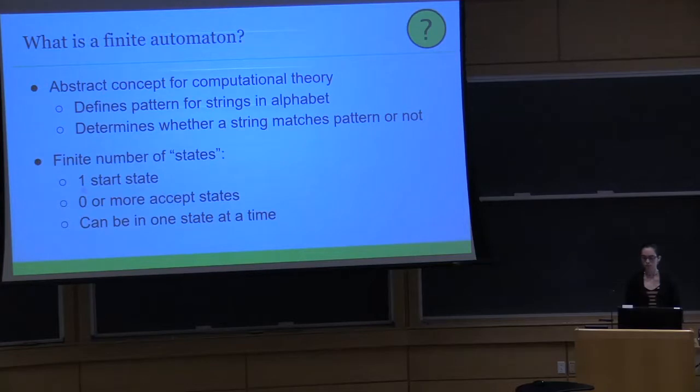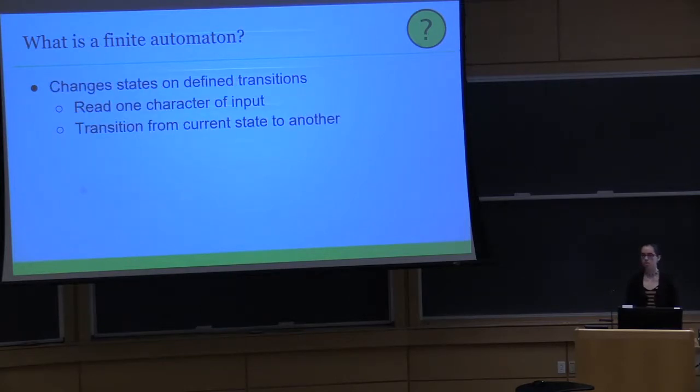A machine has a finite number of states, which are sort of like statuses. It starts in one predetermined state, and it has zero or more accept states, which I'll explain in a minute. The machine can only be in one state at a time, and it changes states based on a set of transitions or rules that have been defined.